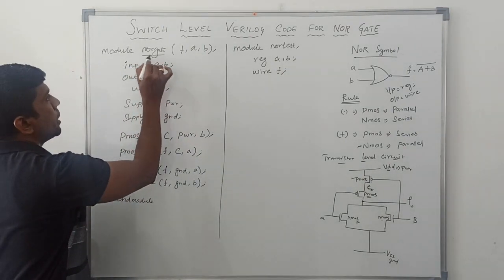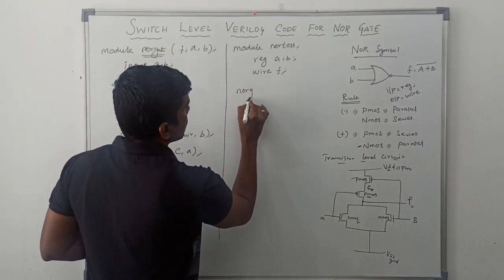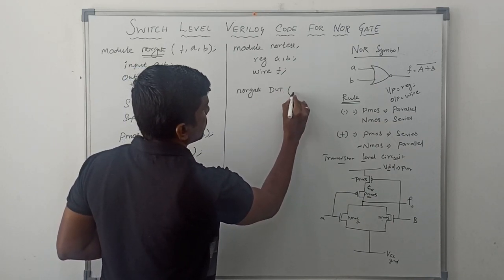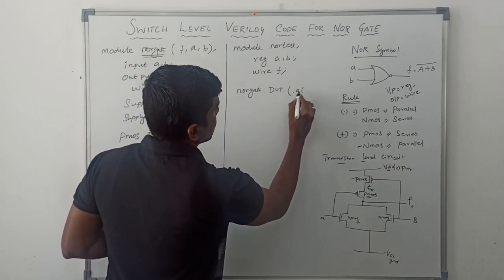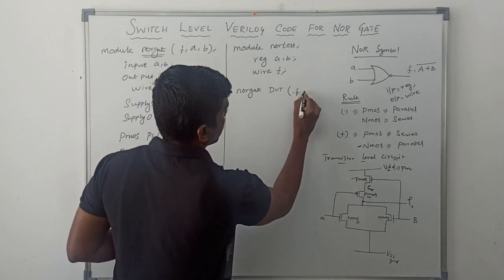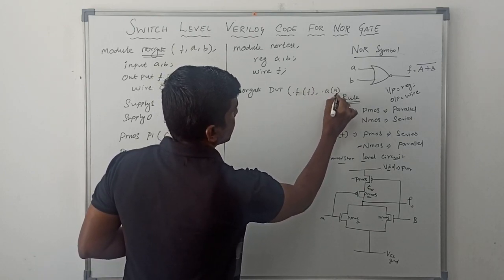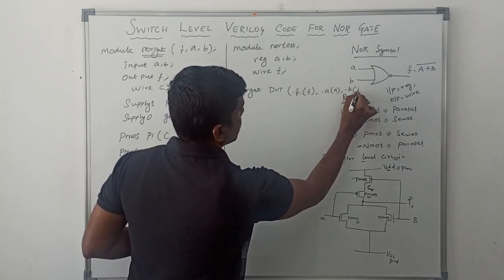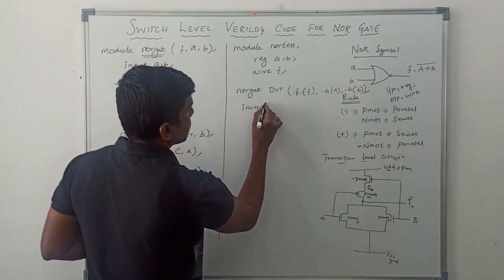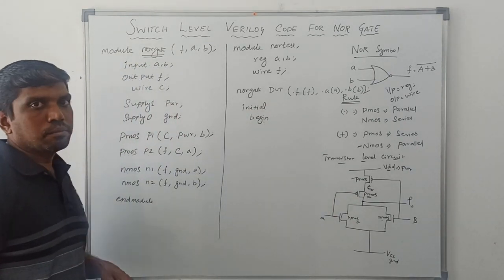Here the module name is NOR_gate, so this name is reflected here. Instantiate NOR_gate as device under test (DUT). Then connect the ports: dot F connects to F, dot A connects to A, dot B connects to B. Then initial begin.